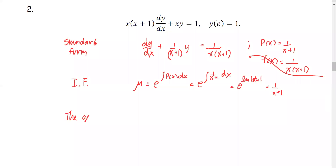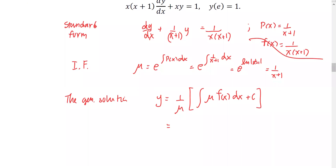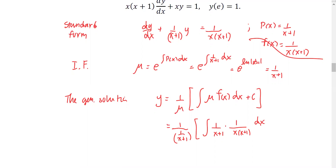So the general solution is y equals 1 over mu times the integral of mu times f(x) dx plus C, or 1 over (1 over (x+1)) times the integral of 1 over (x+1) times f(x), which is 1 over x(x+1), dx plus C.